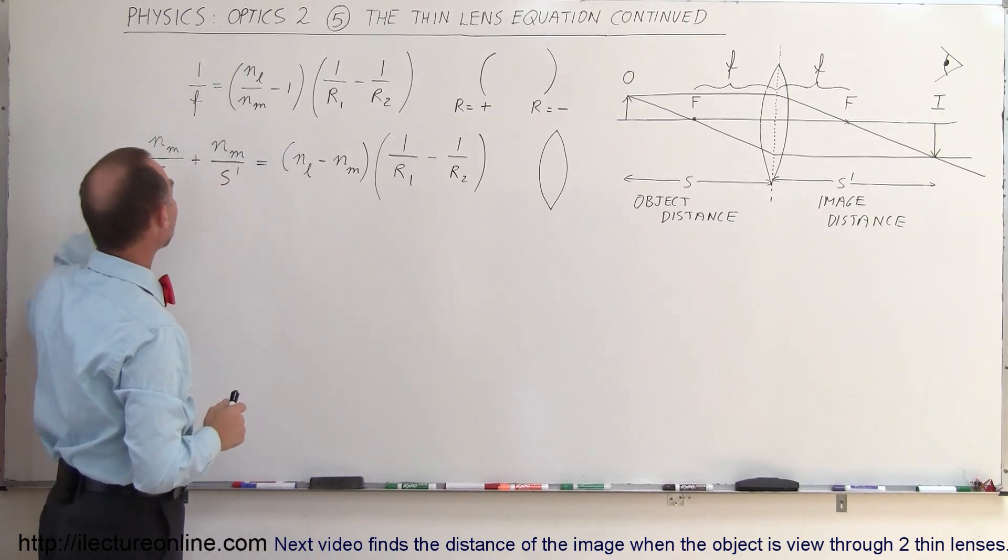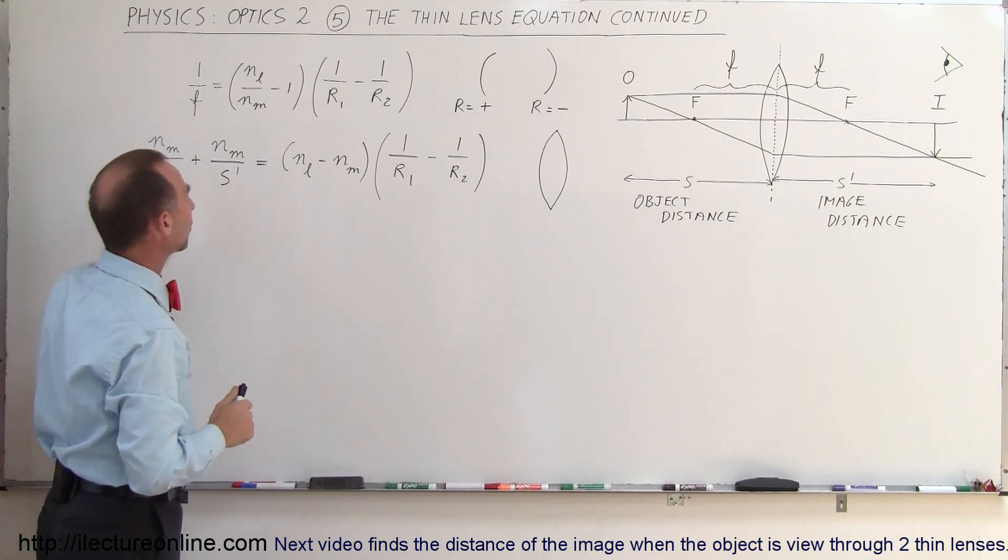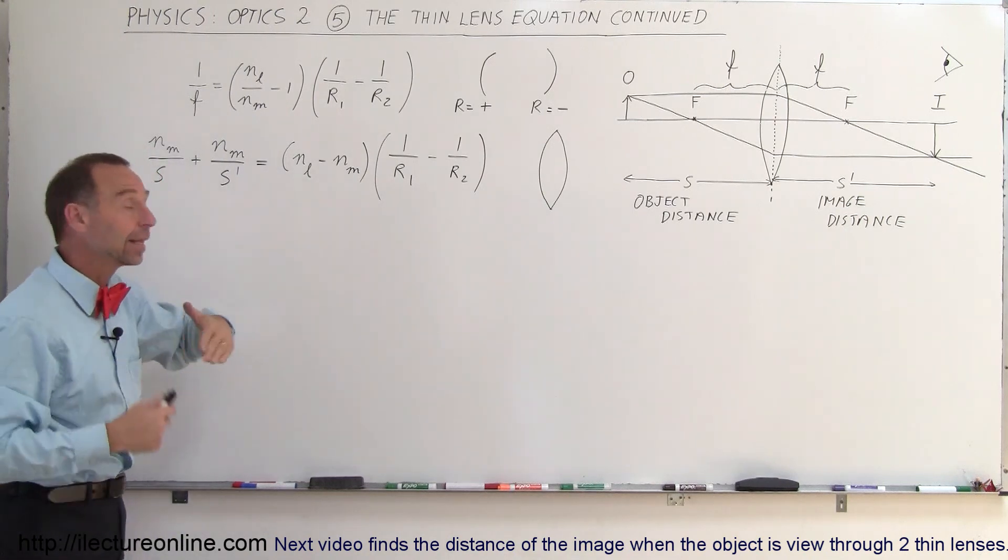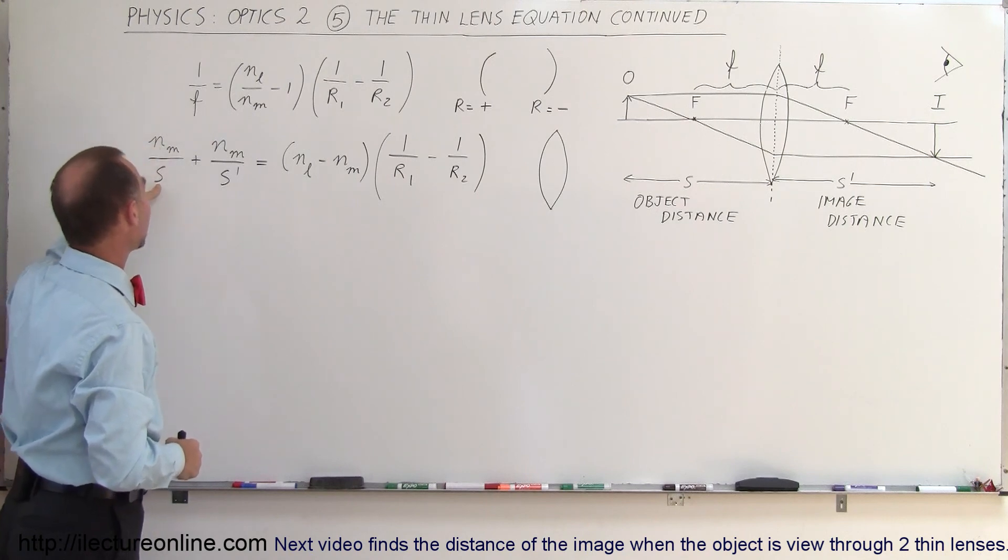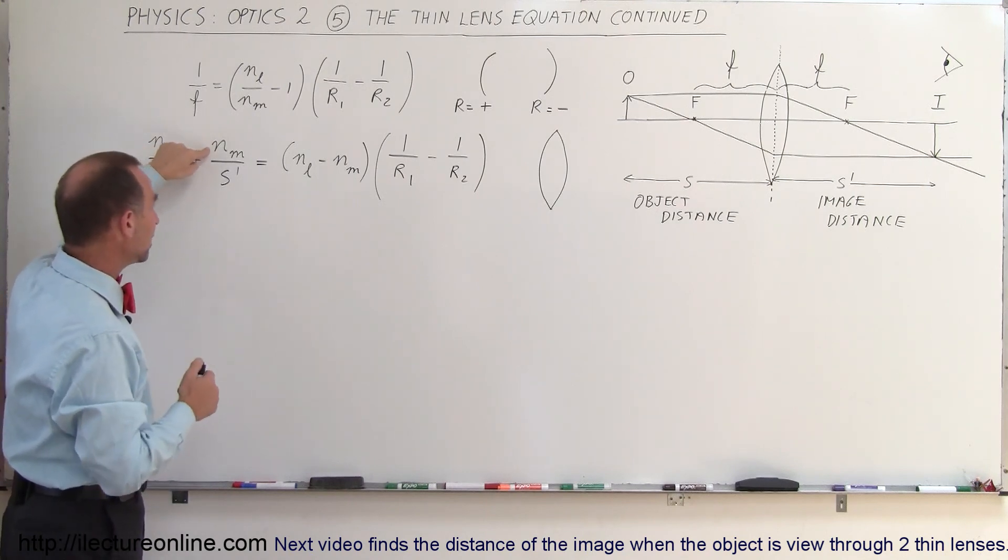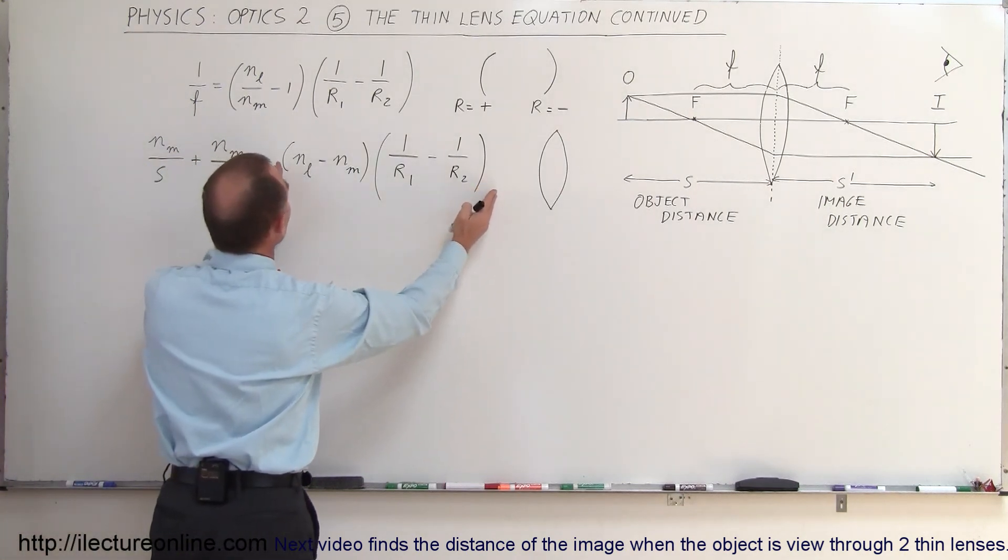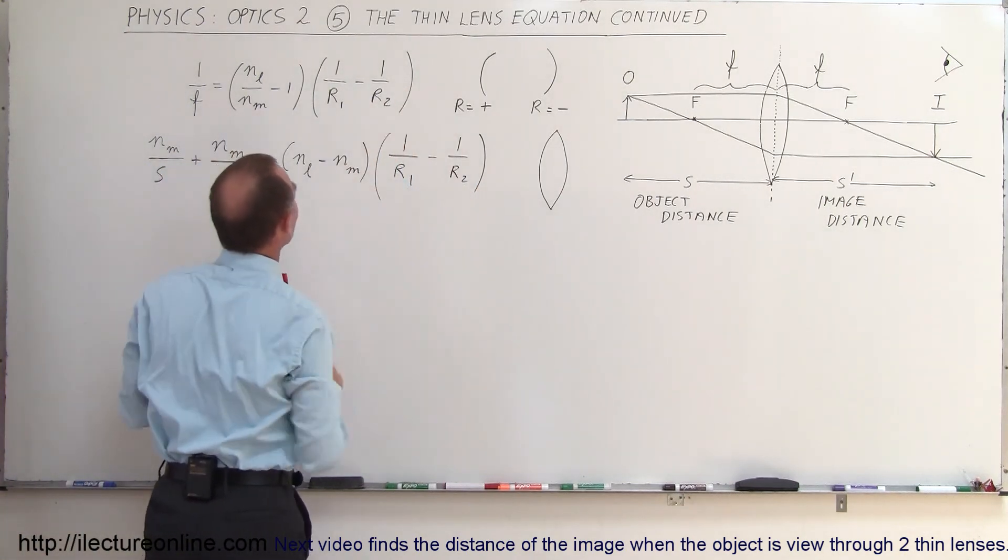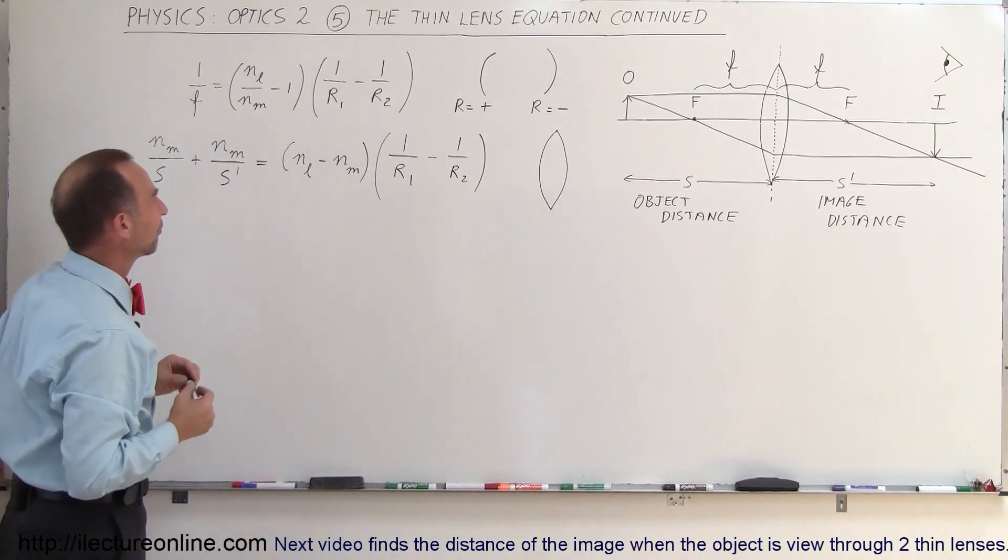Now assuming that N_M is the index of refraction of the medium, we can come up with an equation (we'll describe later how it's derived) that N_M over the object distance plus N_M over the image distance equals this. Notice that this is almost the same as what we have over there, but we'll show you in a moment where it's slightly different.